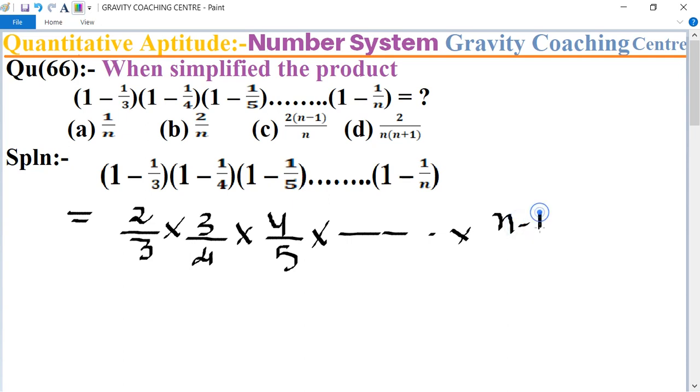So here 3 and 3 cancel, and 4 is canceled by 4, 5 by 5, and n minus 1 is canceled by this part. Therefore, 2 into 1 equals 1 by n, so it equals 2 upon n.